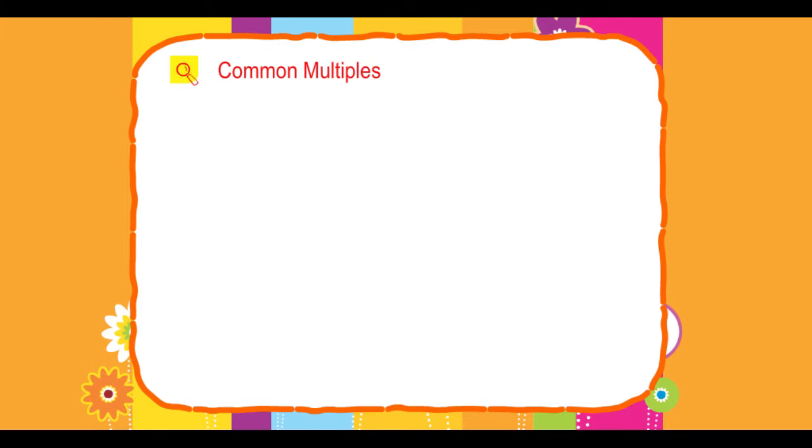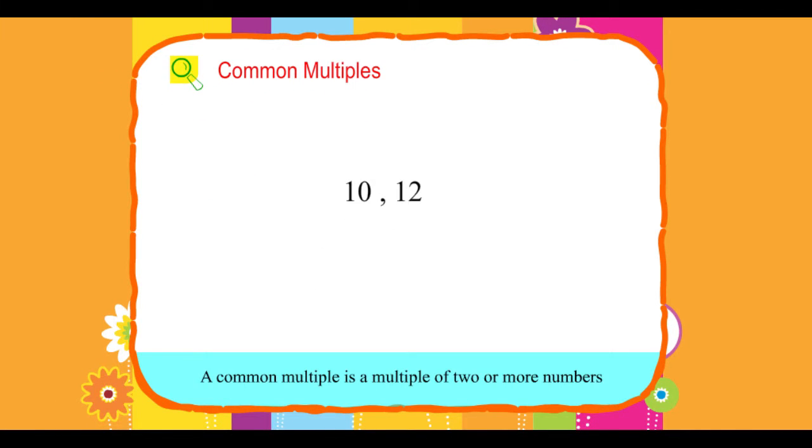Common Multiples. A common multiple is a multiple of two or more numbers. Let us consider the first ten multiples of 2 and 5.